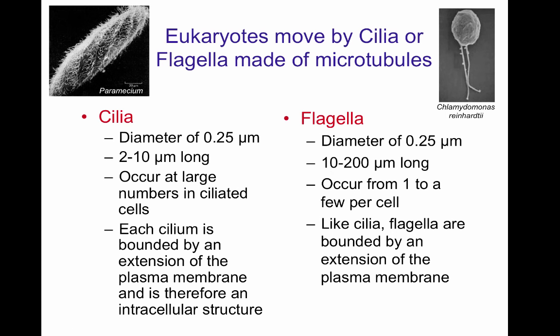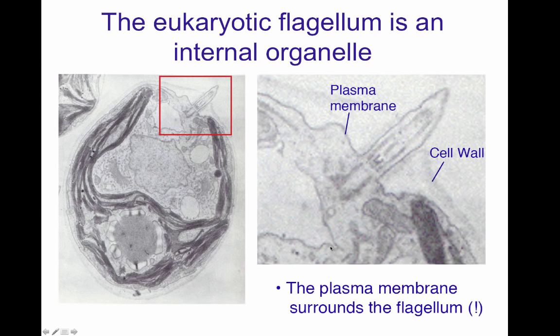There are also a lot fewer flagella. Some cells only have one, while cells may have up to eight. Like cilia, flagella are also surrounded by a plasma membrane, making them an internal organelle as well.